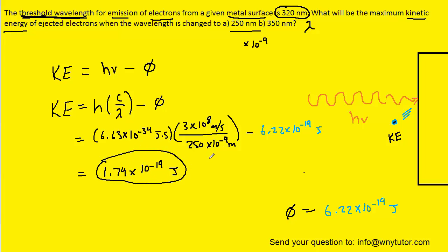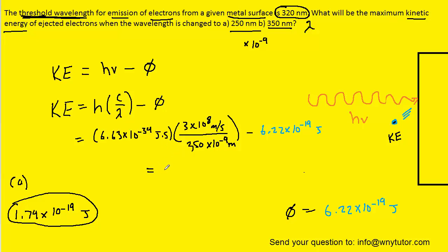For part B, it's the same process except we're substituting in 350 times 10 to the minus 9 meters for the wavelength. Let's go ahead and simply change the 250 to 350. When you type that in you get a curious result: negative 5.33 roughly times 10 to the minus 20 joules for your kinetic energy. Now be careful here. We cannot actually have a negative kinetic energy. So in fact this value is not the correct answer to part B. We have to back up and look at this from a conceptual standpoint.